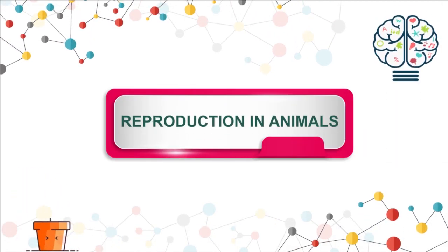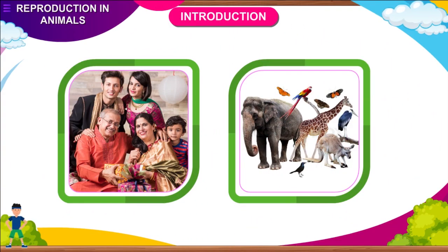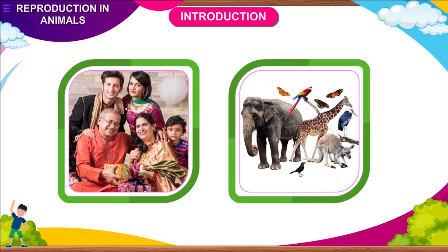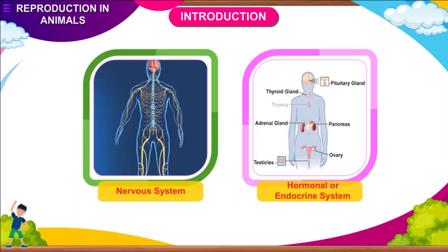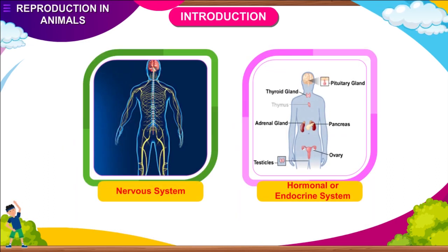Reproduction in Animals. The functions of the body of a living organism are regulated by two major control systems: the nervous system and the hormonal or endocrine system.